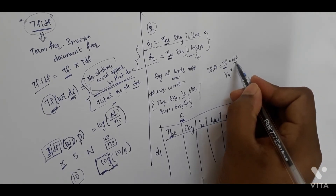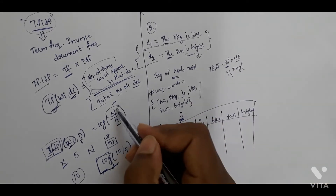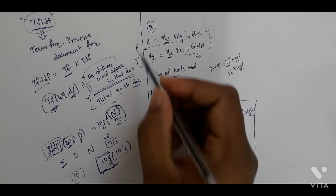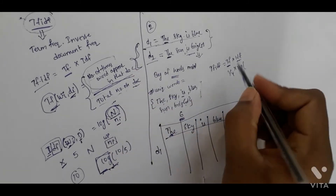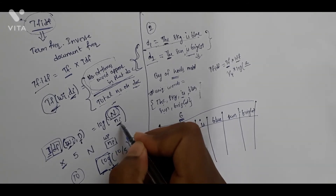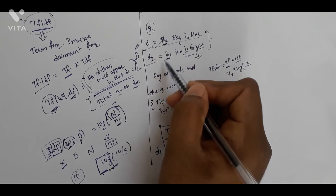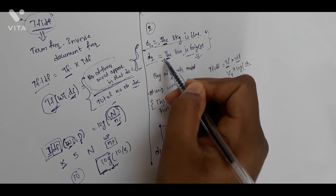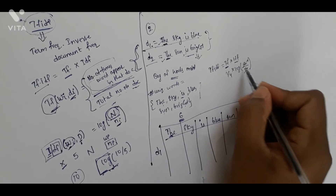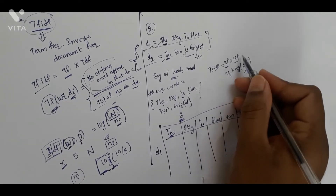Inverse document frequency is the logarithm of N, where N is the total number of documents. We have 2 documents, so it is 2 divided by Ni. For the word 'the,' both documents contain it, so IDF = log(2/2) = log(1) = 0. Therefore the total TF-IDF value for 'the' is 0.